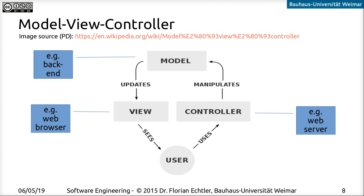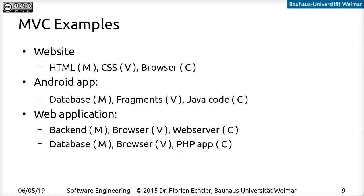There are a couple of other examples. A website in itself can also be considered to follow this approach. The HTML content is the actual data — the model. Then CSS, the styling part, is the view, which decides how the data is presented. And the browser is kind of the glue in between, the controller that brings these things together. Similarly in an Android app: we have an internal database as the model, we have the user interface fragments as the different views on the data, and we have the Java code in between as the controller.